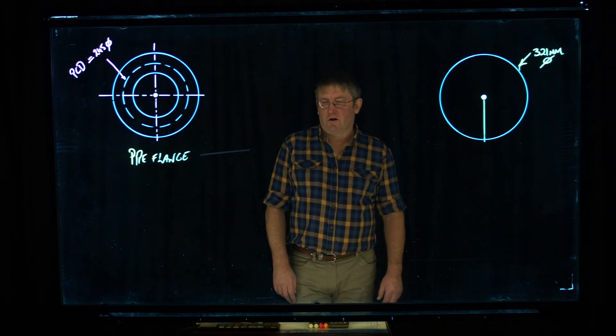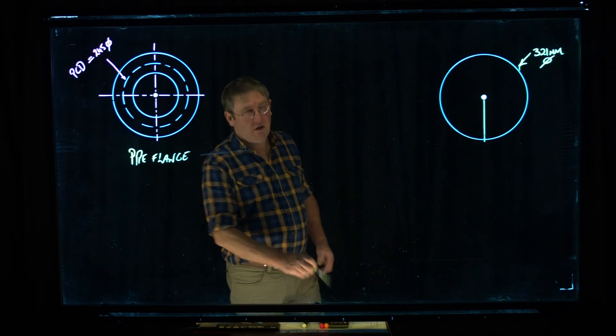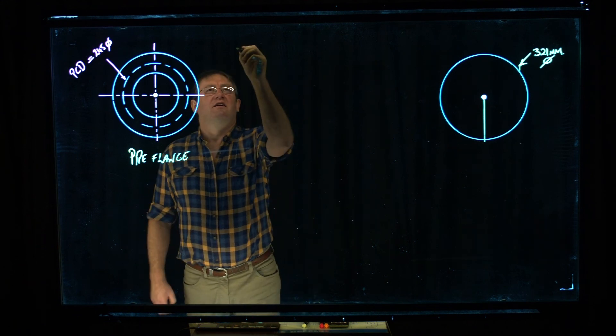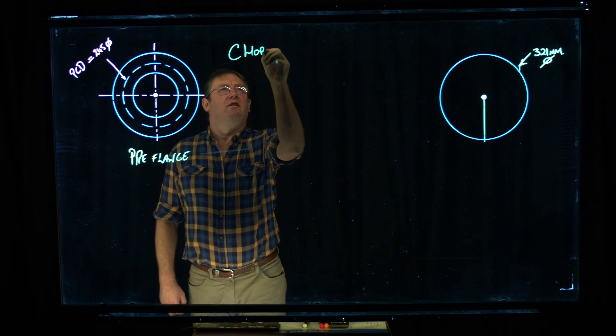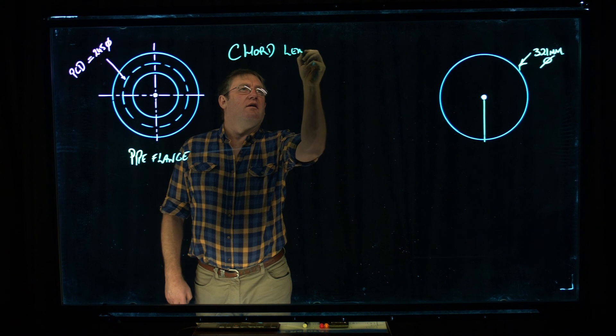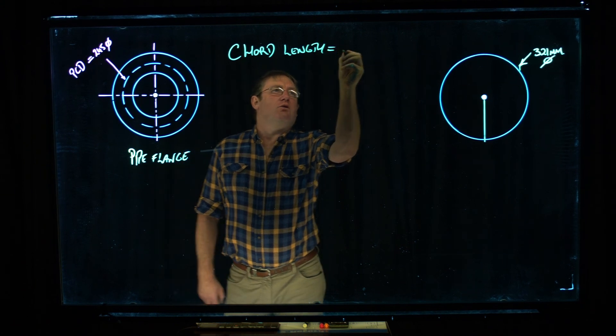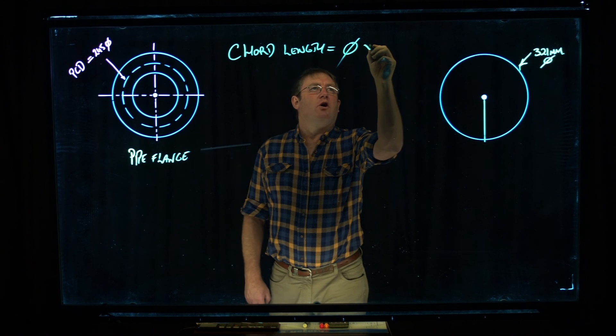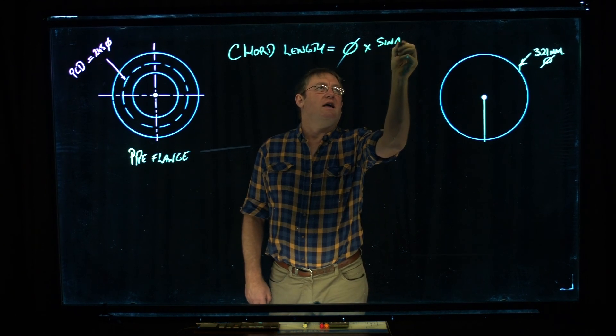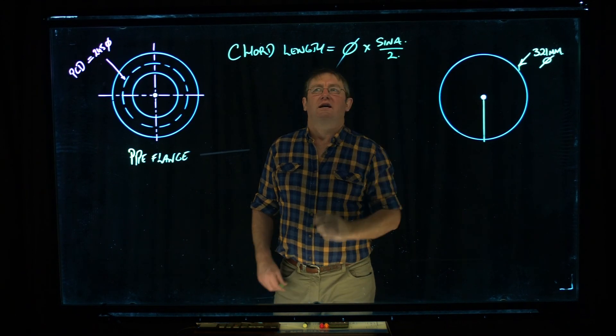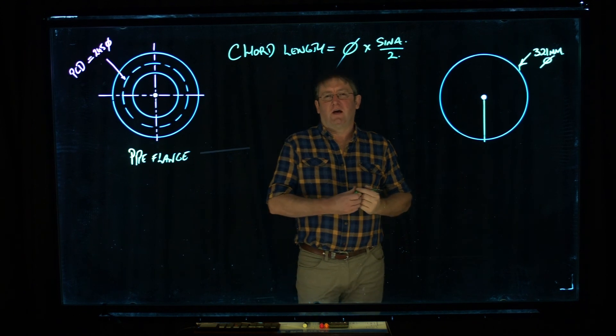Right, this video here is on how to determine a chord length. So a chord length equals the diameter of a circle times sine A over 2. That's the formula for determining a chord length.